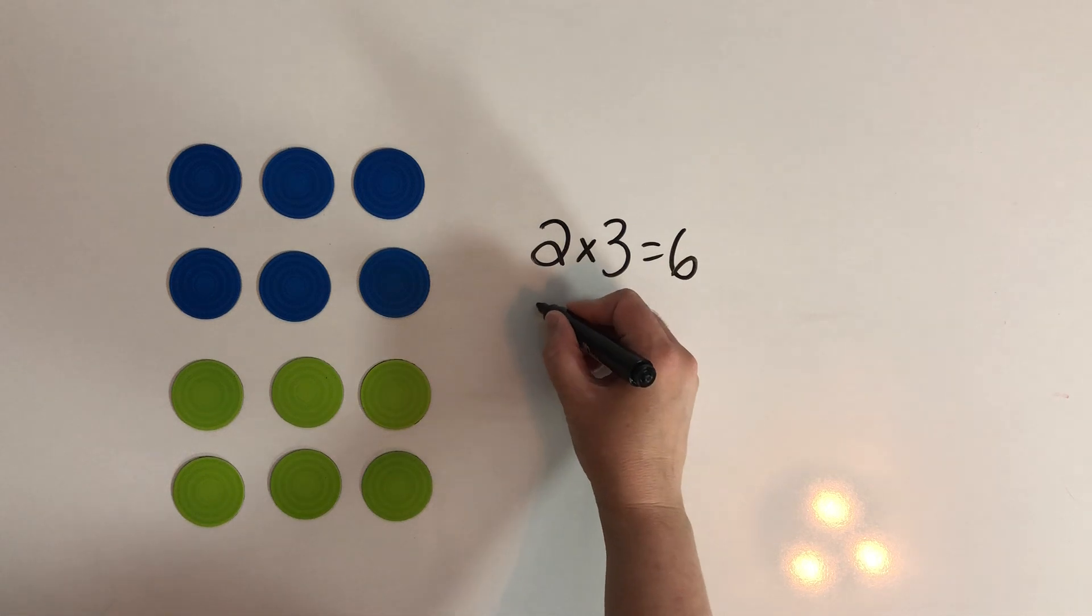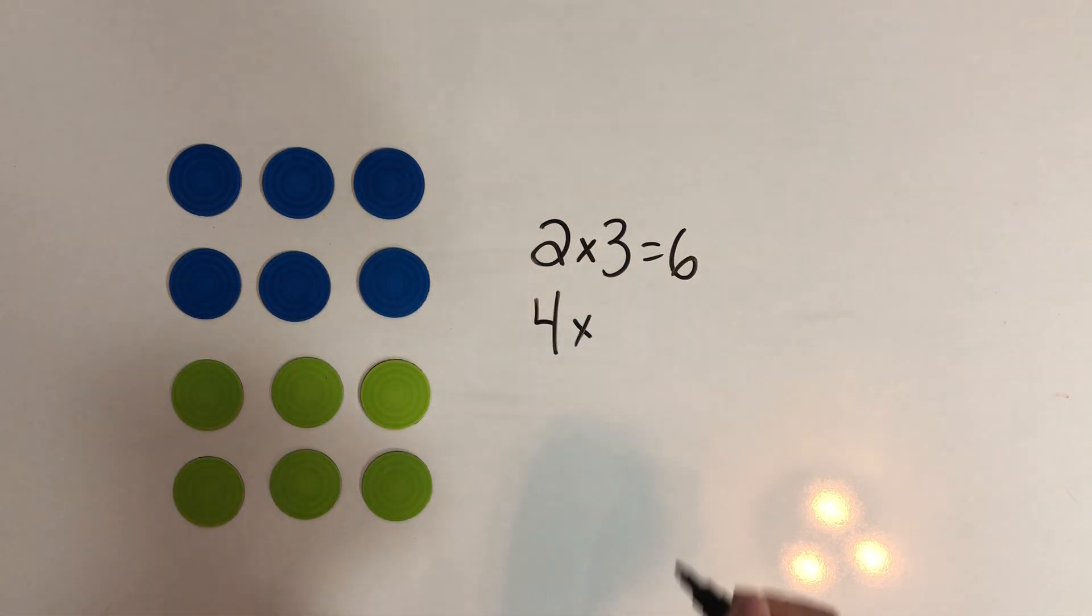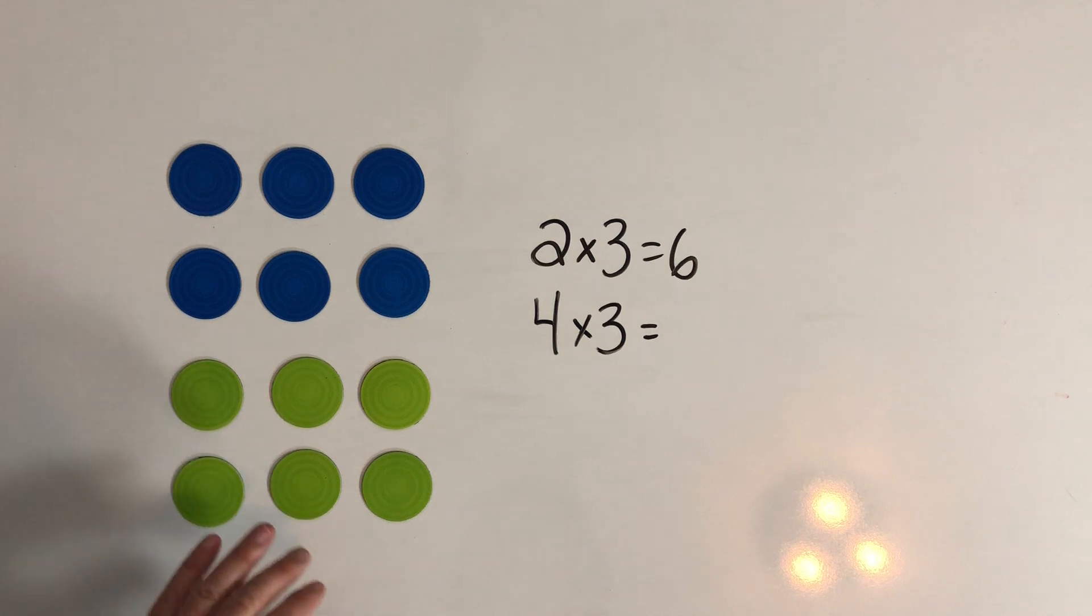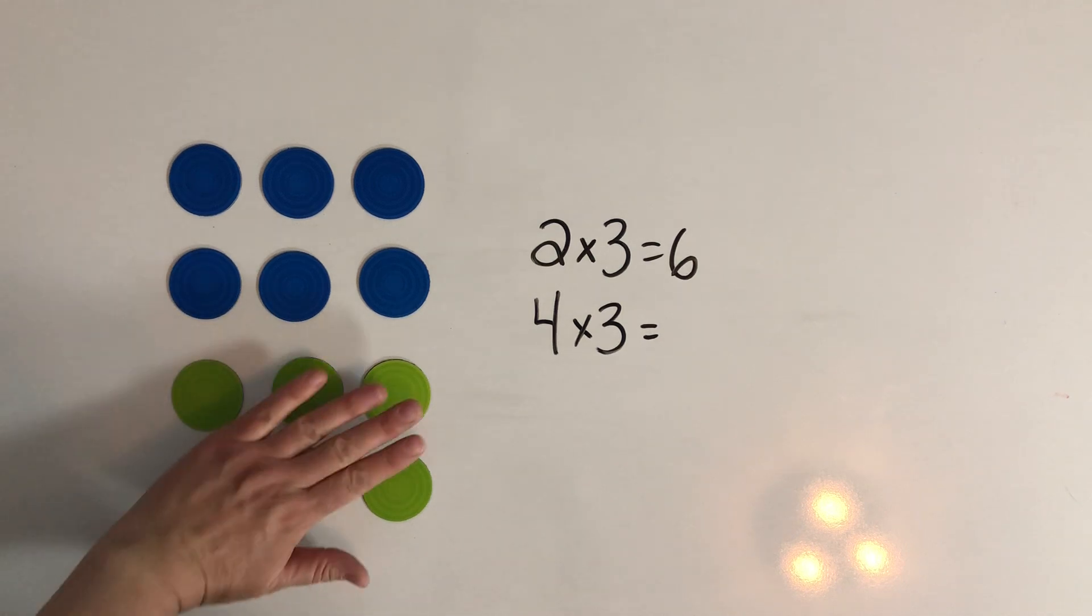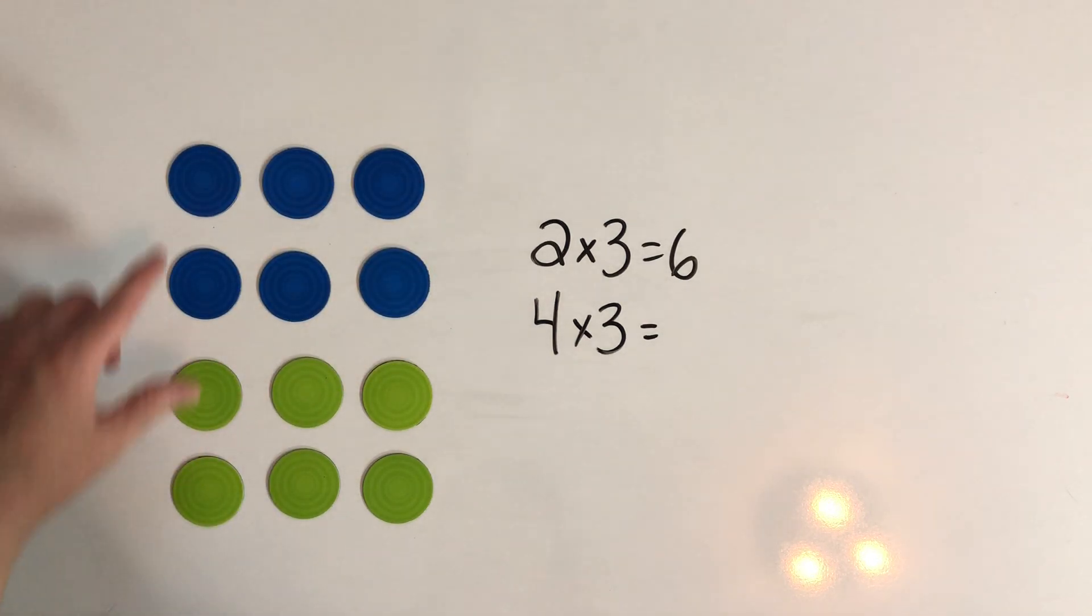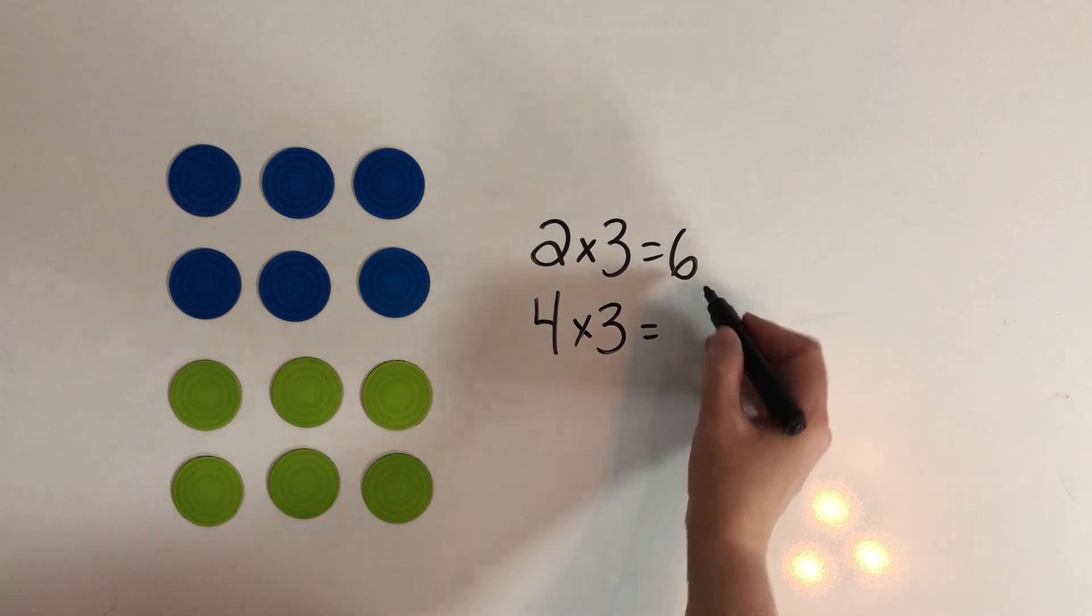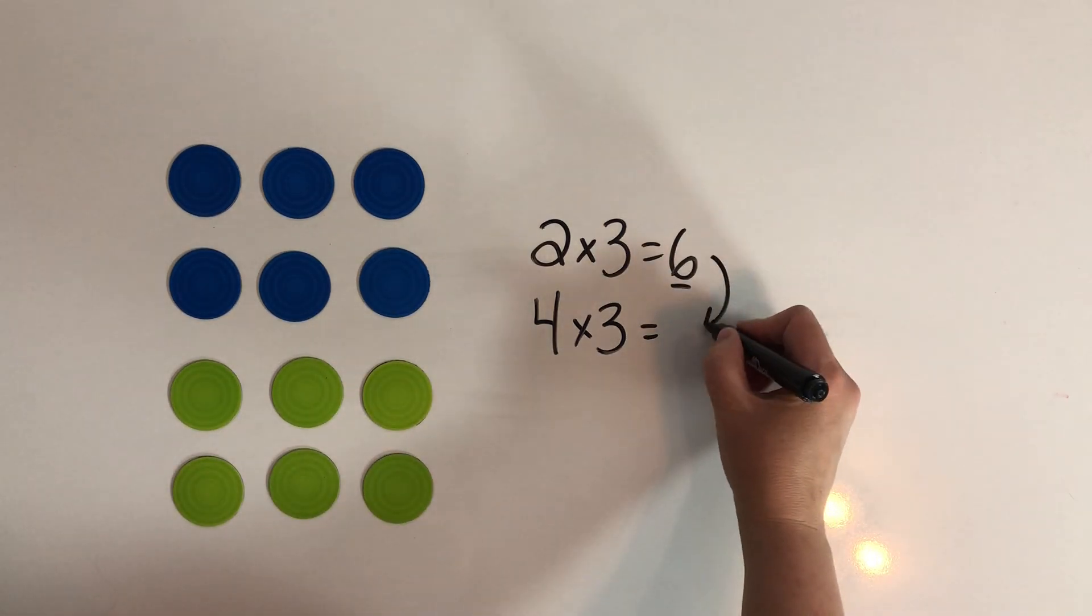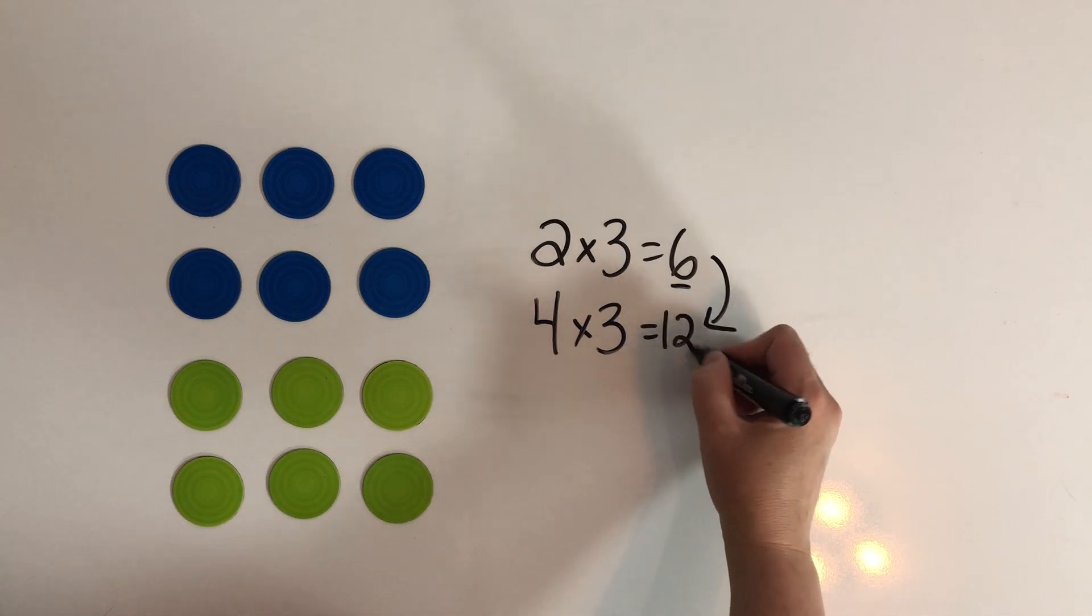That means we now have four rows of three. So we doubled the amount of rows and we also doubled the amount of dots in our array. Do you see how it doubled when we added the six down here? So we had two rows of three, now we have four rows of three. So we doubled the rows and we doubled the total number of objects. If we had six, we can double that six to make twelve.